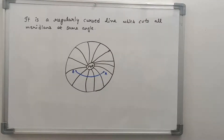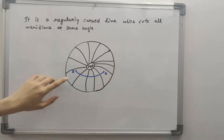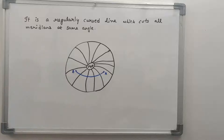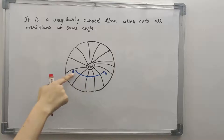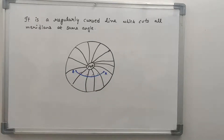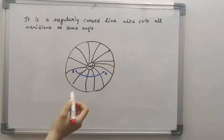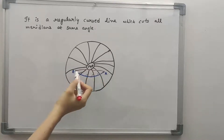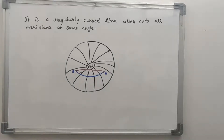Now we will be talking about rhumb lines. A rhumb line is a regularly curved line which cuts all the meridians at the same angle. When viewed from above the North Pole, all the black lines are meridians and the curved line from point A to point B is the rhumb line, so all these angles must be equal. Unlike the great circle route, it does not give the shortest distance over the Earth between two points — that would be the great circle route.